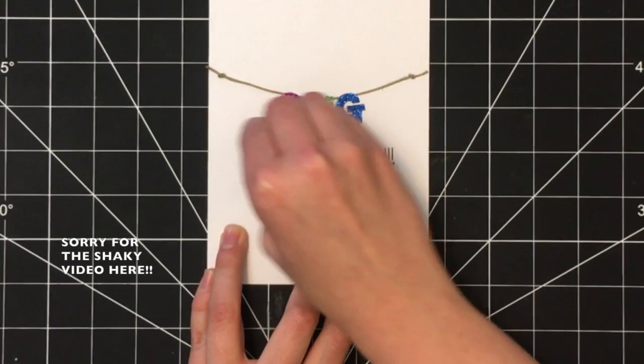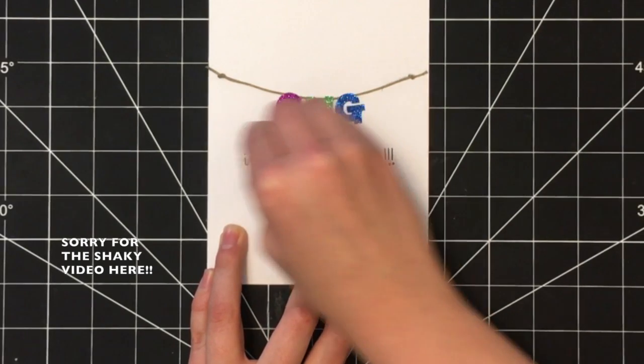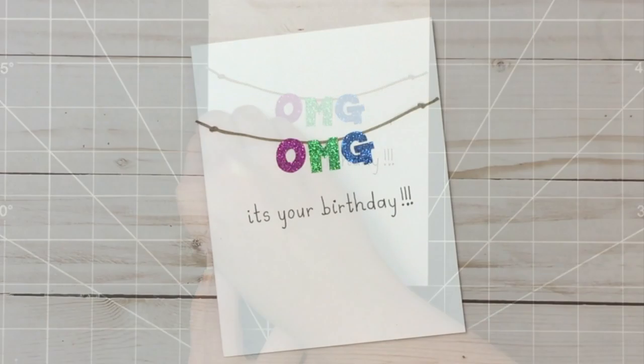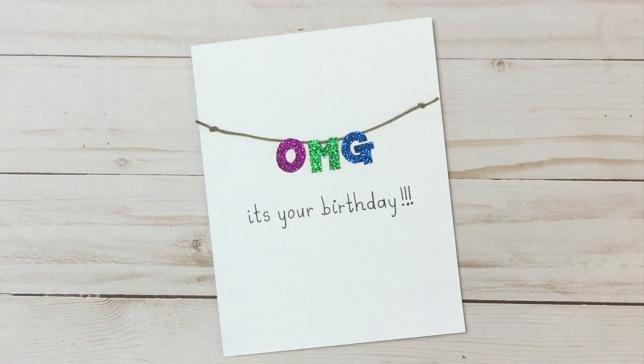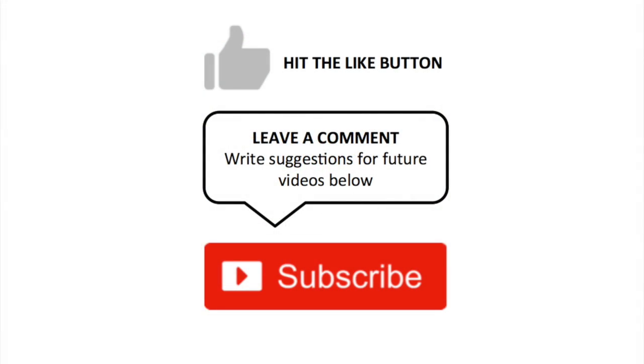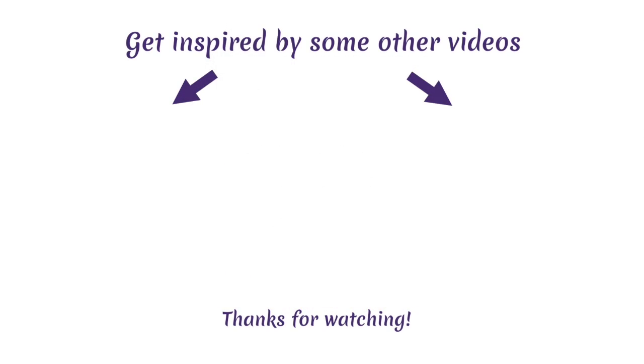As a final step, I took an eraser and simply erased the pencil line that I had initially drawn for my lettering. Once you've done that and any other final touch-ups, this OMG It's Your Birthday card is complete. I hope you enjoyed this tutorial for a fun, unique, happy birthday card.